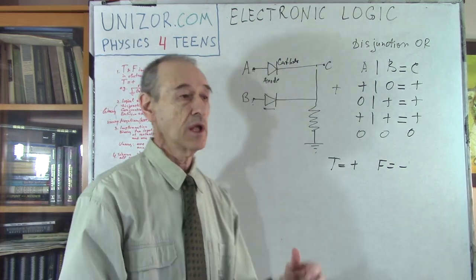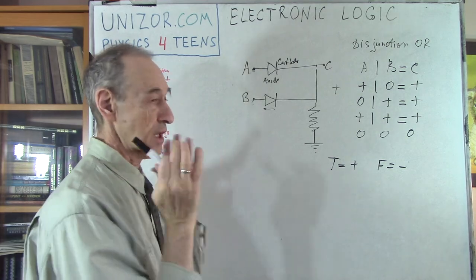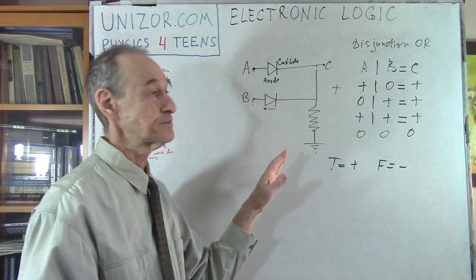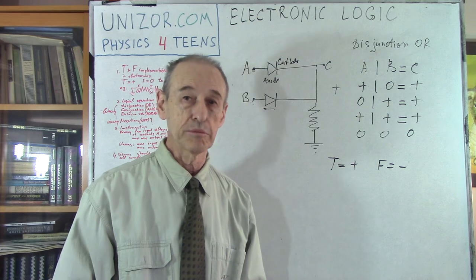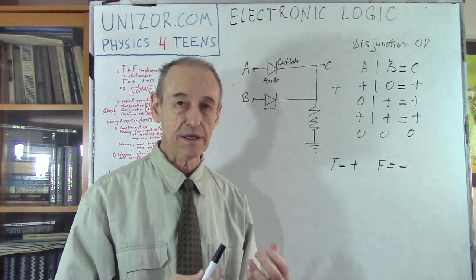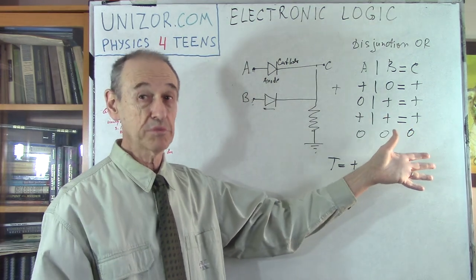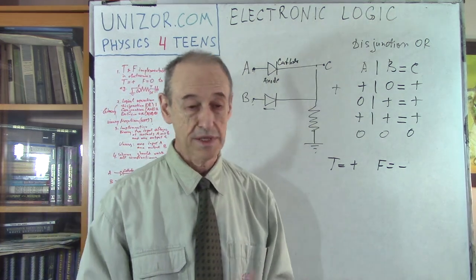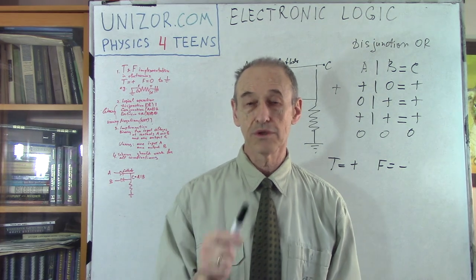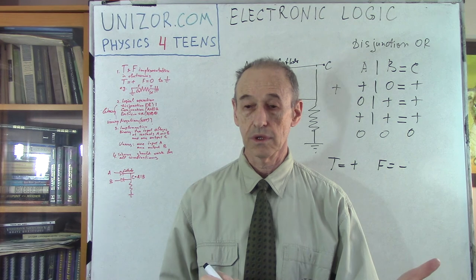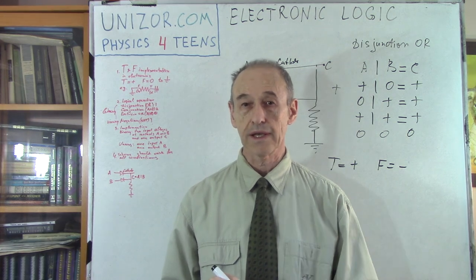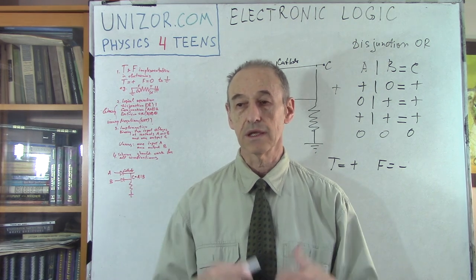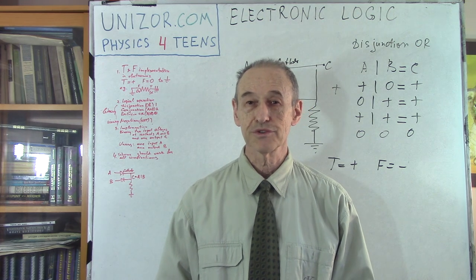We will talk about this again in the next lecture, dedicating one small lecture per operation to discuss the schema in detail. This is a very primitive schema; the real ones are a bit more complex. But I just wanted to give you a taste of how mathematical logic can be implemented in electronics using diodes. I'd like you to read the notes for this lecture on unizor.com — go to the Physics for Teens course, Electromagnetism, and in the Electronics part you will see this and all other lectures. That's it for today. Thank you very much and good luck.